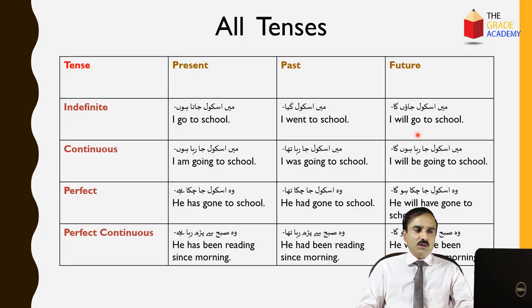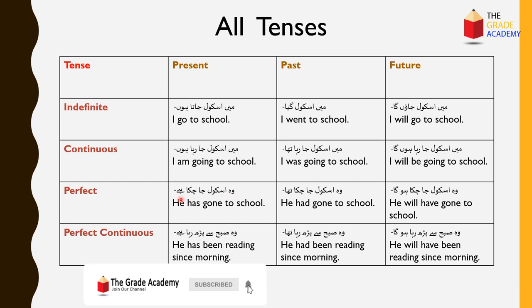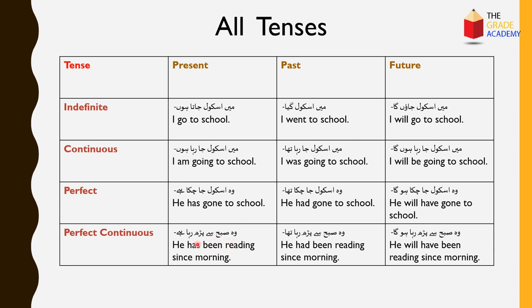For example, consider the sentence 'I am going to school' applied across tense forms: present continuous, past continuous, future continuous; present perfect, past perfect, future perfect; present perfect continuous, past perfect continuous, and future perfect continuous. Each of these 12 tenses will be covered in detail in upcoming lessons.